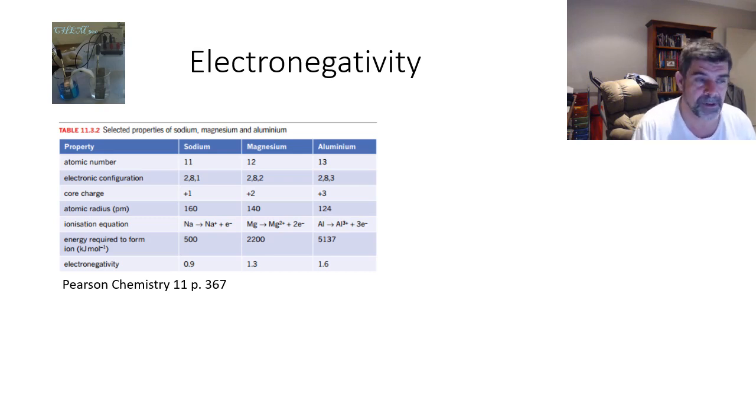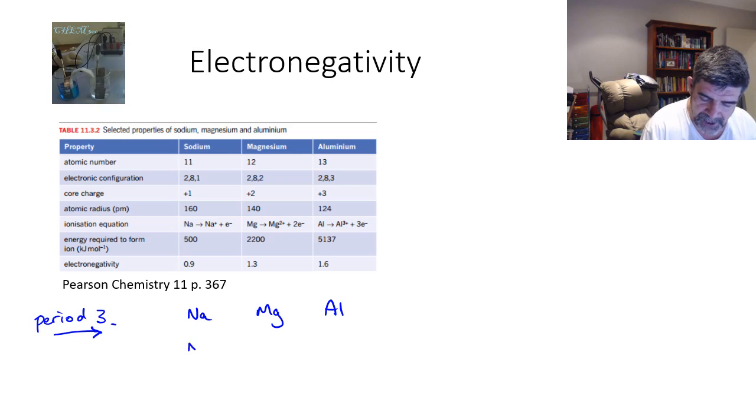When we look at each of these, there are a couple of things we can notice. First of all, sodium, magnesium, and aluminum are all in the same period. They're in Period 3. As we go across this period, sodium forms a 1+ ion, magnesium forms a 2+ ion, and aluminum forms a 3+ ion.